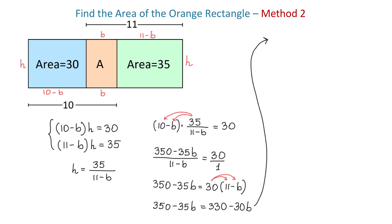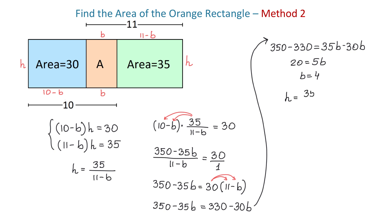Isolating B: 350 − 330 = 35B − 30B, so 20 = 5B and B = 4. Replacing B in the expression for H: H = 35 / (11 − 4) = 35 / 7 = 5. Now that we have the base and height, the area of the orange rectangle equals 4 × 5 = 20 square units.